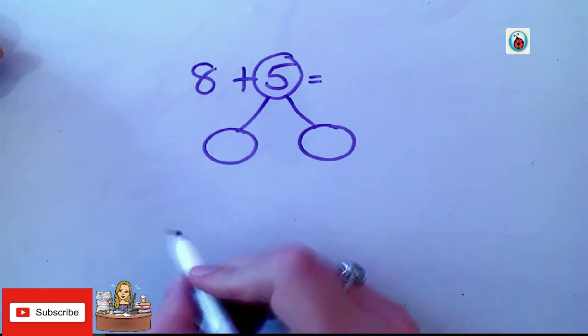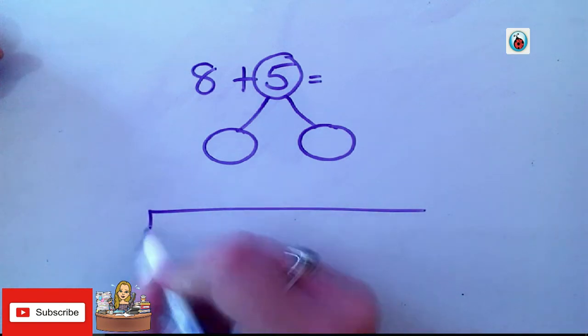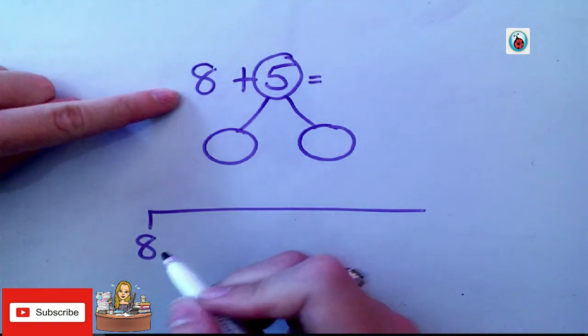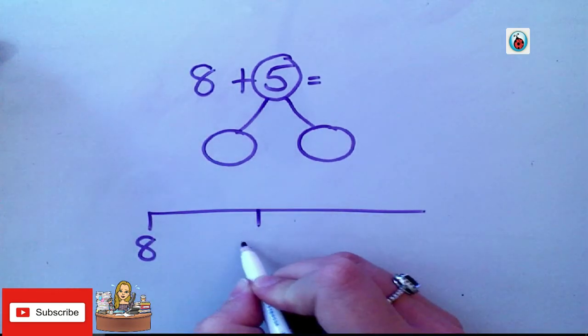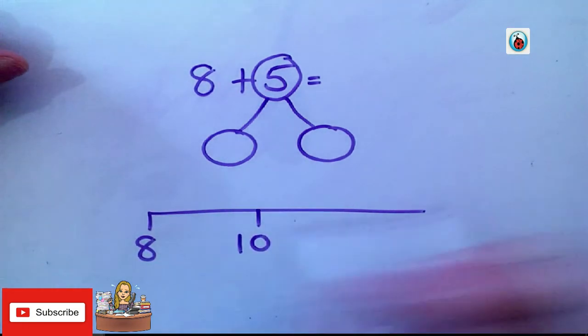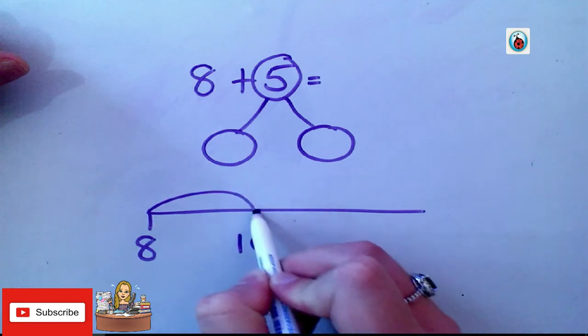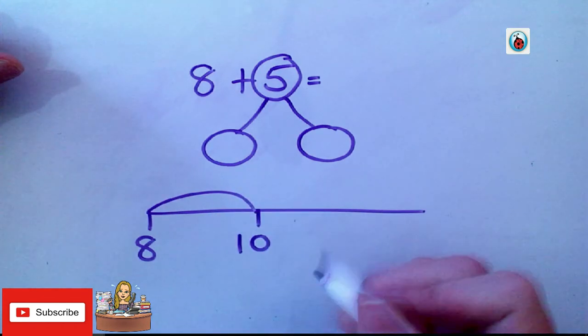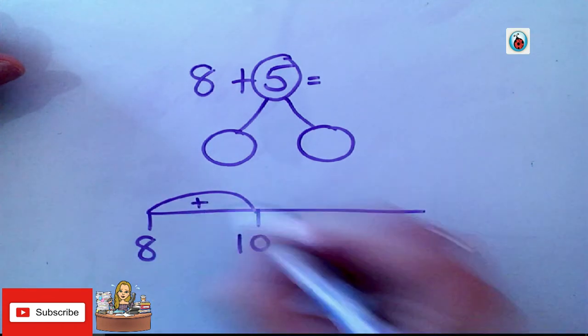I'm going to draw a number line. So, I start on 8, and I'm going to get to 10. The idea of bridging is to make 10s. What do I add to 8 to get to my 10? Yeah, that's right, I add 2.